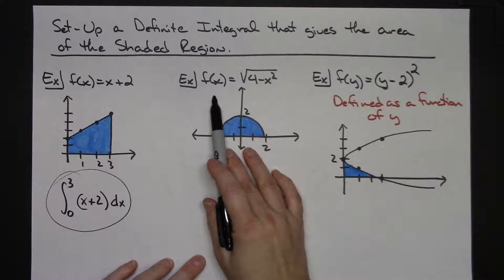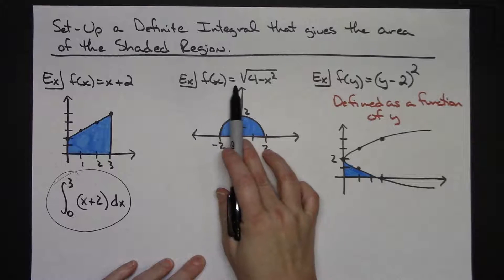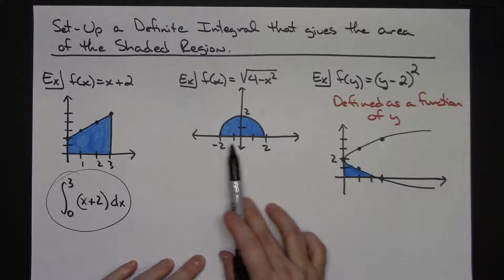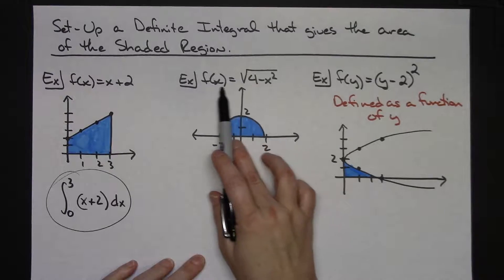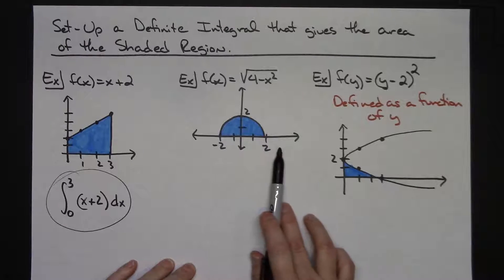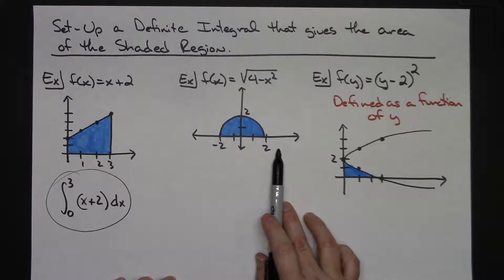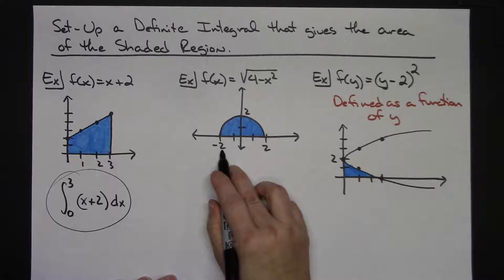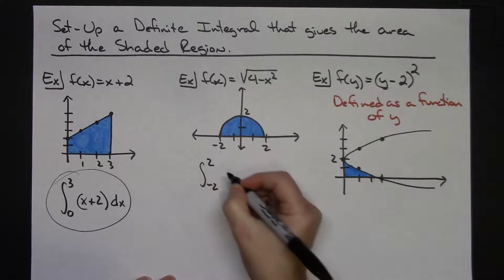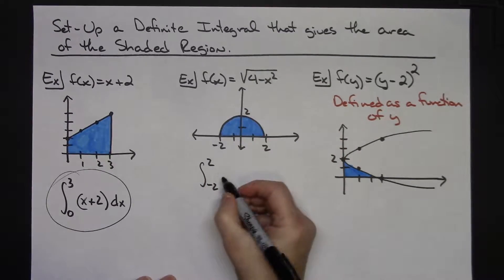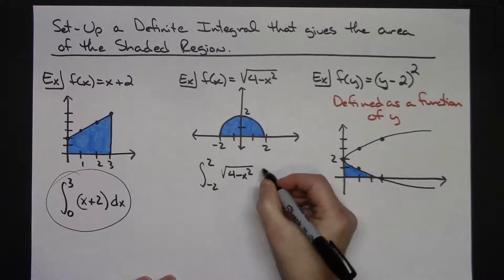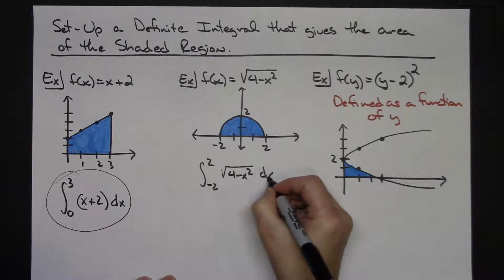For this second example, let's say my function is f of x equals square root of 4 minus x squared. They provide you with the picture. So again my function is in terms of x, so I'm going to be looking along my x-axis for my limits of integration. I'm going to run this from negative 2 to 2, and then the function itself is the square root of 4 minus x squared, and my variable of integration there is a dx.